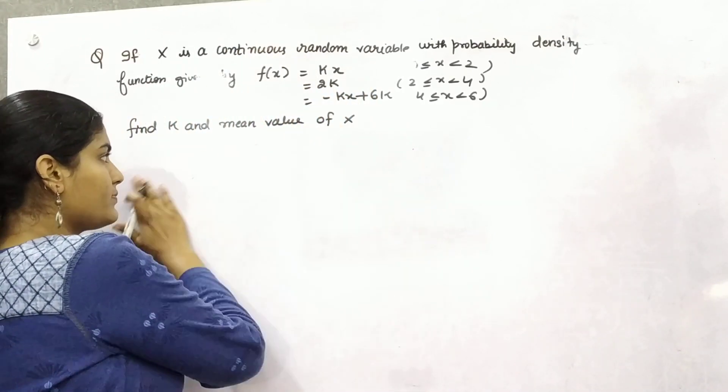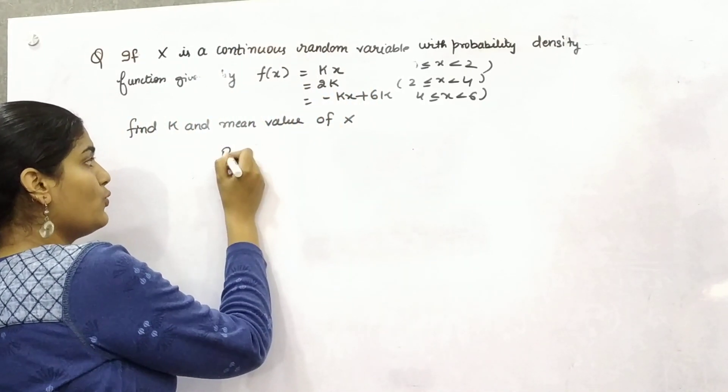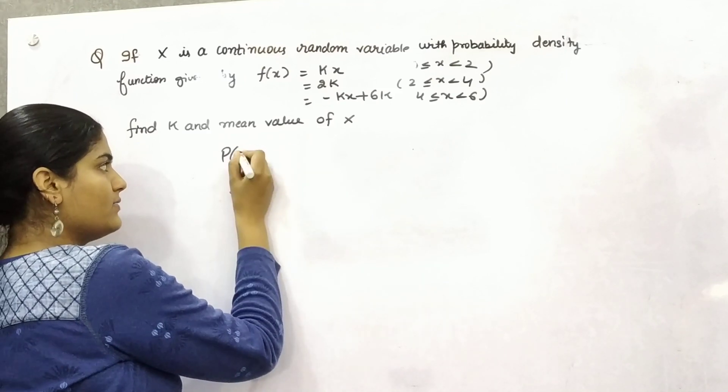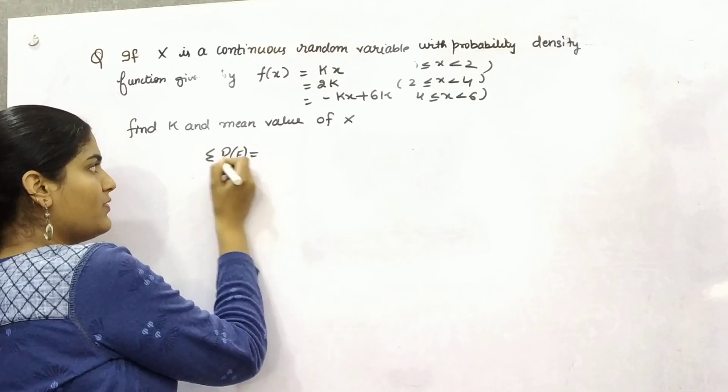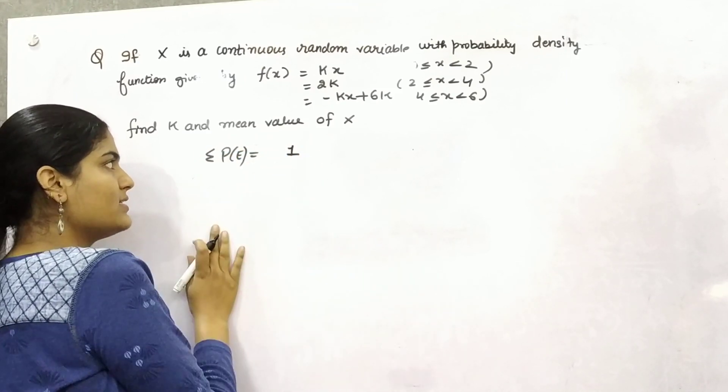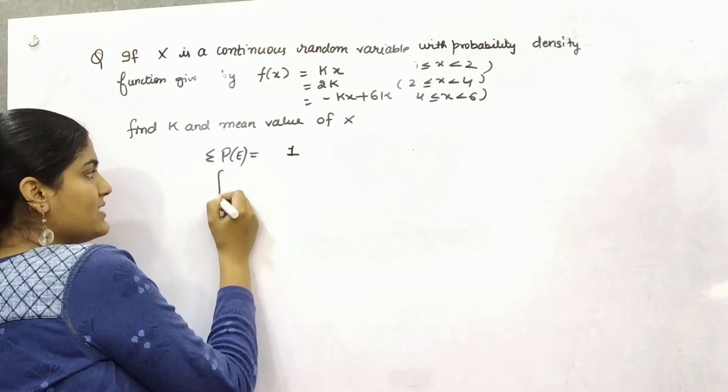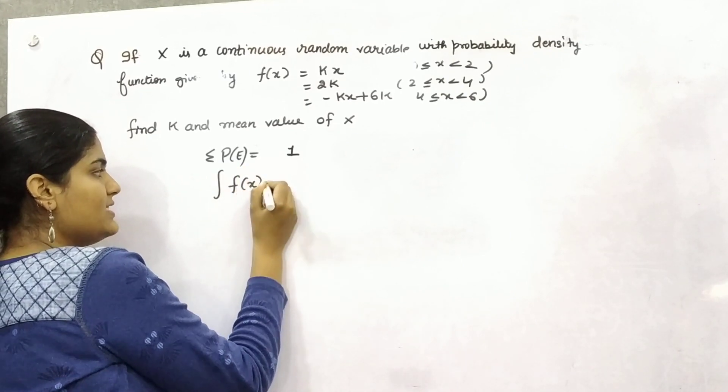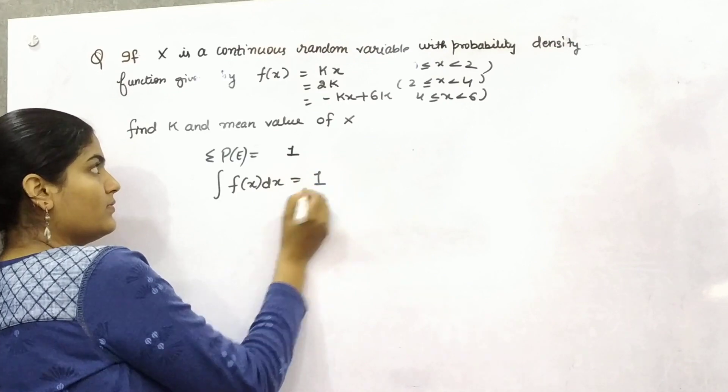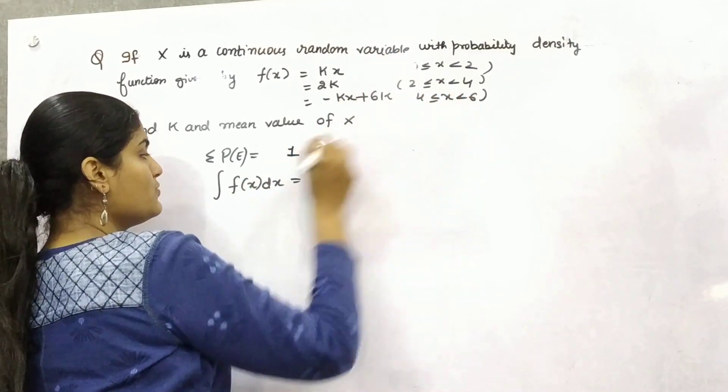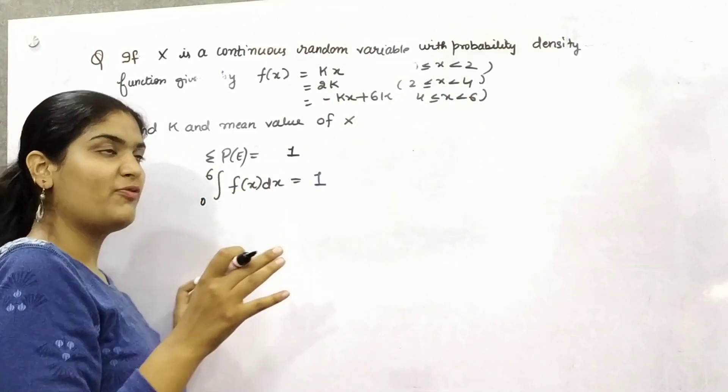So simply the total probability of any event, the sum of the probability is 1. Now this can be written as integral f(x) dx, limit 0 to 6, which is sum of probability.